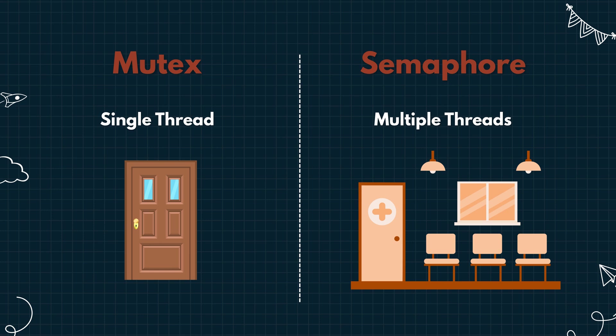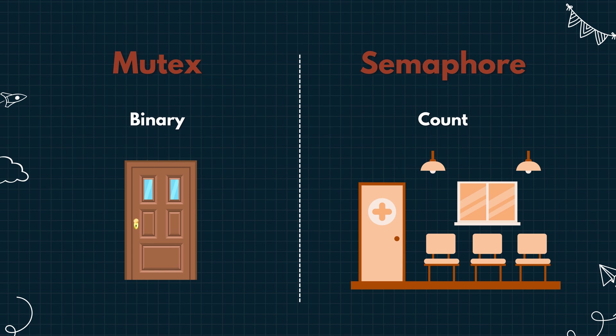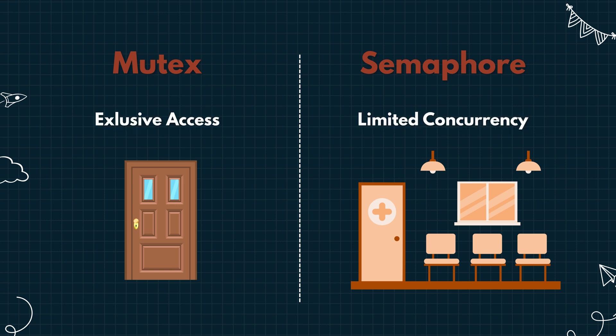In a mutex, the lock is binary — it's either locked or unlocked. But with a semaphore, it's a counter. For example, with a count of five, the semaphore stays open until five threads enter; after that, others must wait. Both tools are used for synchronization, but a mutex is ideal for exclusive access, while semaphores are better suited for limited concurrent access.